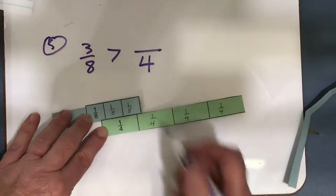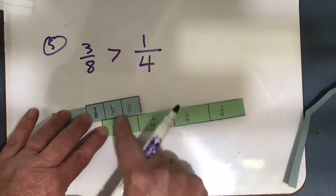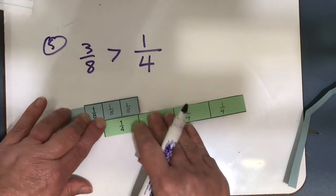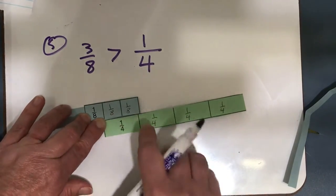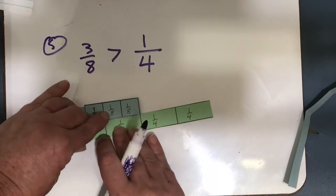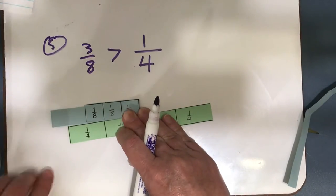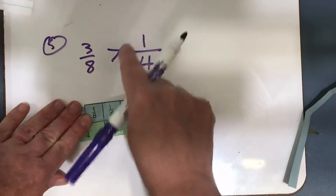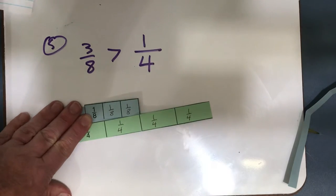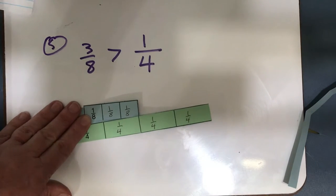3 eighths is greater than 1 fourths, because 2 eighths is equivalent to 1 fourth. I can see, 2 eighths is 1 fourth, but 3 eighths is not greater than 2 fourths, so 1 is the only numerator that I could put there. 3 eighths is greater than 1 fourth.